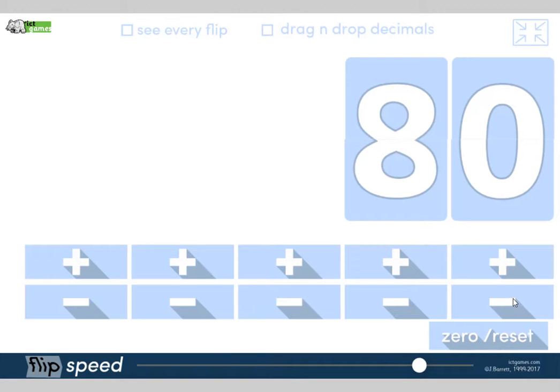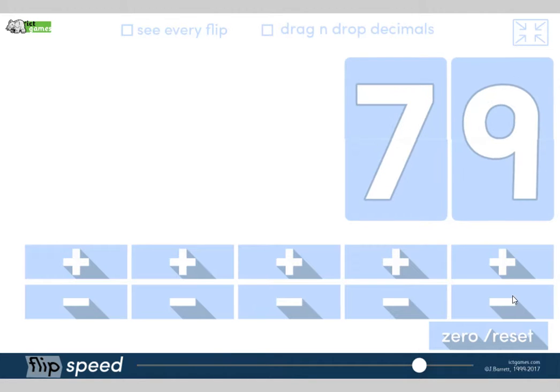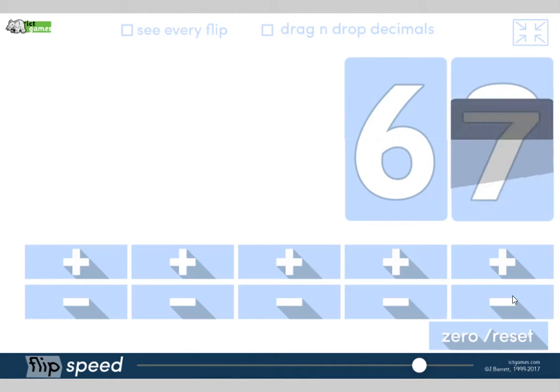Okay, we're going to start with counting backwards in ones from 80. Off we go, 80, 79, 78, 77, 76, 75, 74, 73, 72, 71, 70. What's one less than 70? Yes, 69, 68, 67, 66, 65, 64, 63, 62, 61.